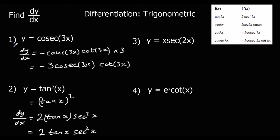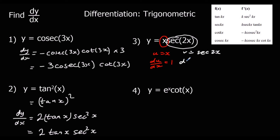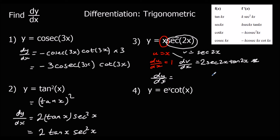Question three: x sec 2x — two functions multiplied together, so it's a product rule question. Let u equal x, so du/dx is 1, and v equals sec 2x. Sec differentiates to sec x tan x, so dv/dx is sec 2x tan 2x times 2, giving 2 sec 2x tan 2x. Applying the product rule: u dv/dx gives 2x sec 2x tan 2x, plus v du/dx gives sec 2x.